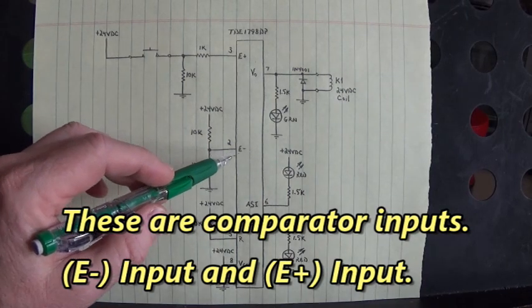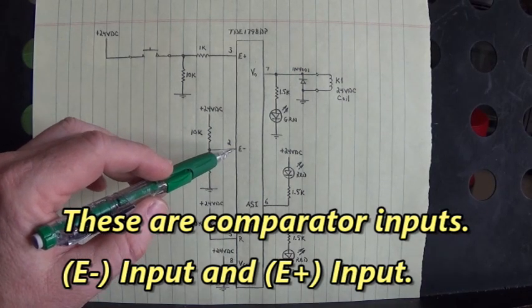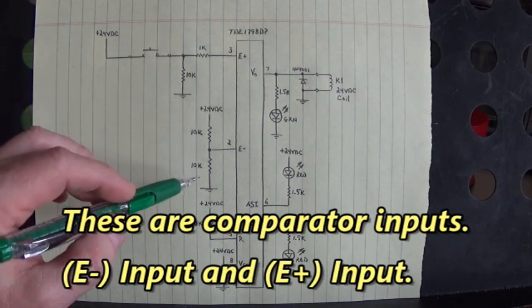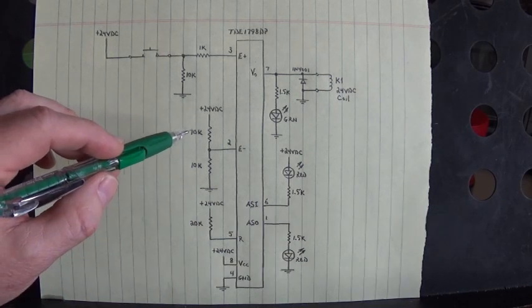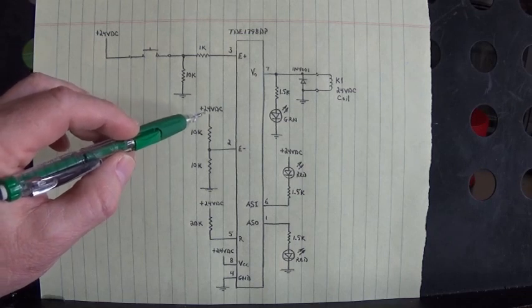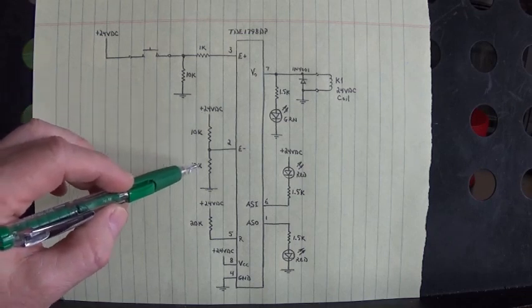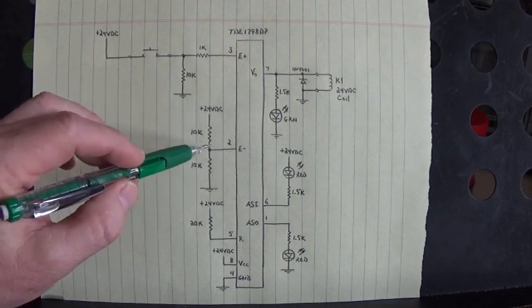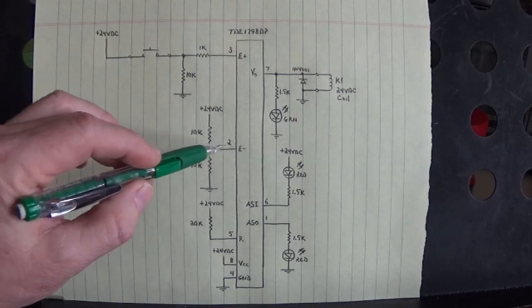That's your non-inverting input. I have a voltage divider right here - a 10k resistor up to plus 24 volts DC and a 10k resistor down here to ground, so we'll have 12 volts on pin 2.